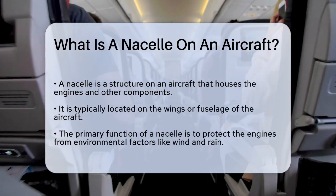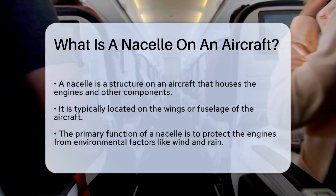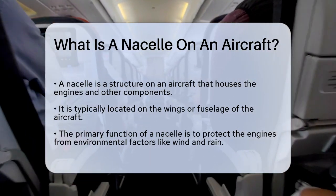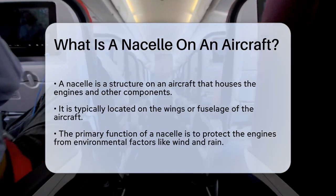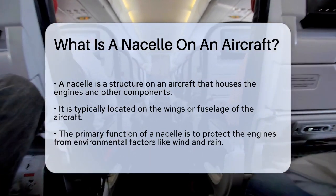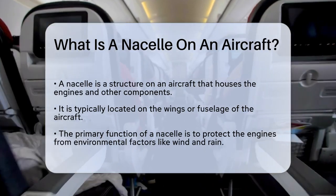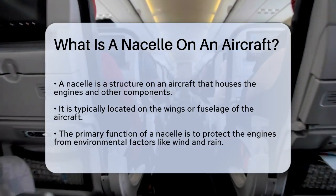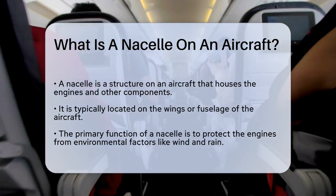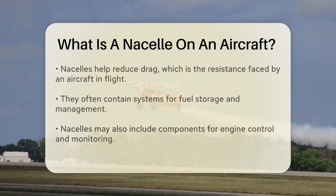A nacelle is a structure that houses the aircraft's engines, along with other essential components. Typically located on the wings or the fuselage, it serves multiple purposes.